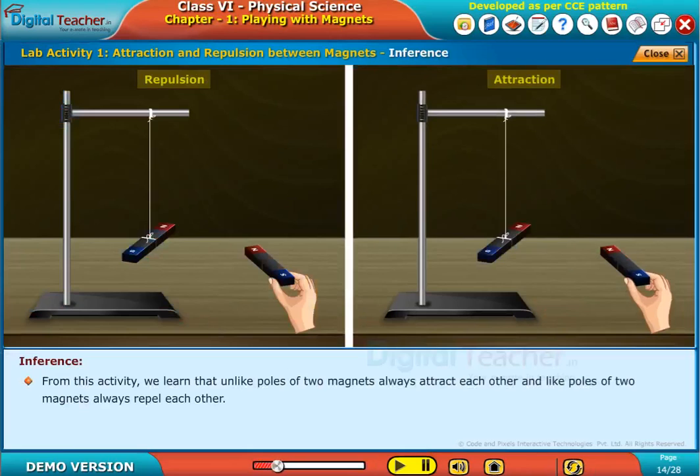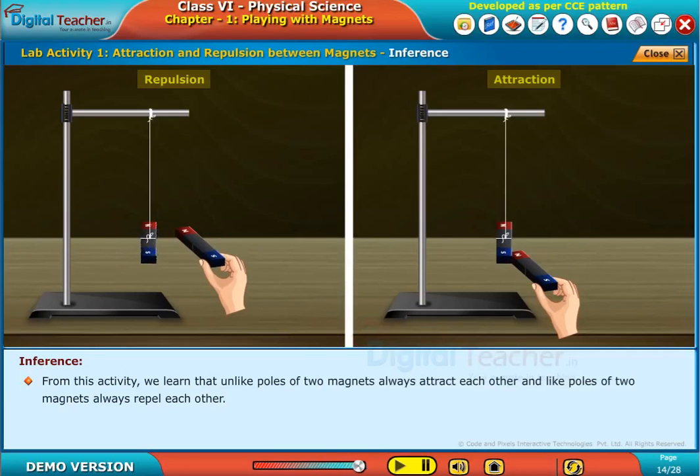From this activity, we learn that unlike poles of two magnets always attract each other, and like poles of two magnets always repel each other.